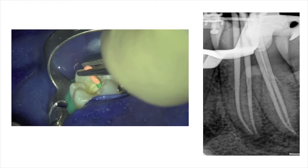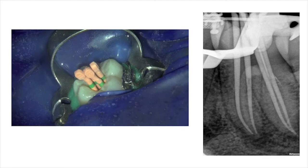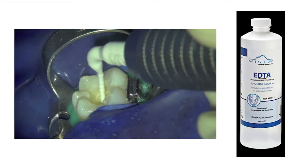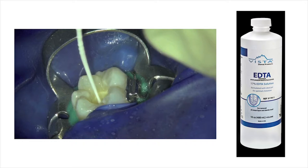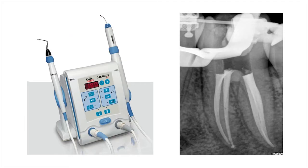After root canal preparation, four size medium WaveOne Gold gutta-percha points were fitted into the prepared root canals and the fit of the cones was verified radiographically. The canals were then filled with 17% EDTA and the solution was activated with the EDDY irrigation device from VDW for approximately 2 minutes to remove the smear layer. This was followed by a final irrigation step using heated 3.5% sodium hypochlorite in the EndoVac system.